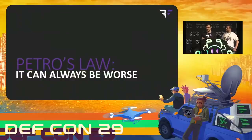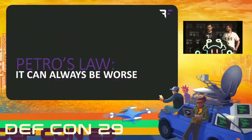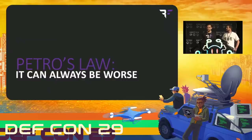This is where I'd like to segue into what I want to call Petro's Law. If I could have one eponymous law, it would be this: it can always be worse. No matter how bad you think it is, it can always be worse. You might think: wow, an entire device making crypto keys of zero — how could it be worse than that? Let me show you.